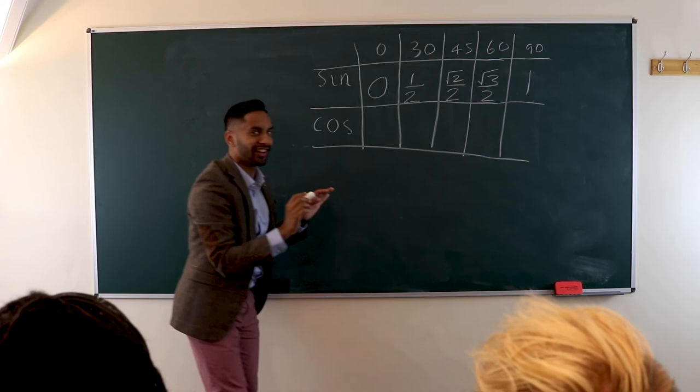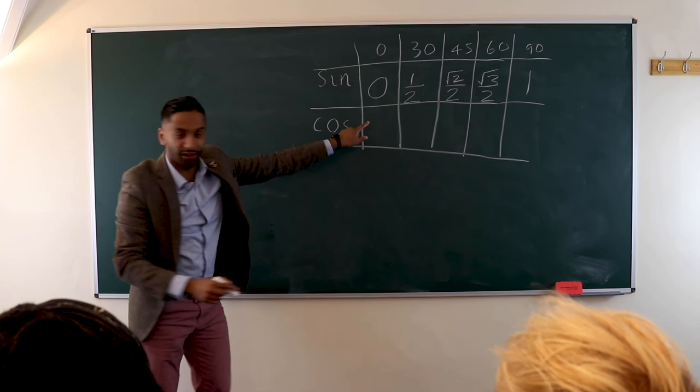And now the cosine, we are descending. So we start off at one and finish on zero. So now because we're descending, square root of three, reverse it. You should reverse it. Three and two. Two and two.